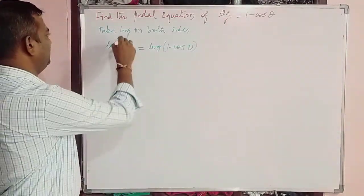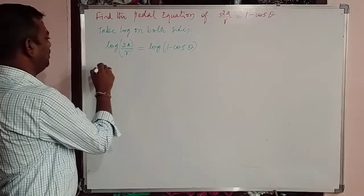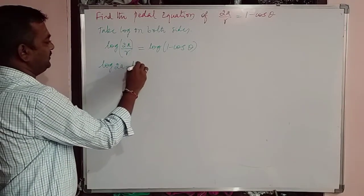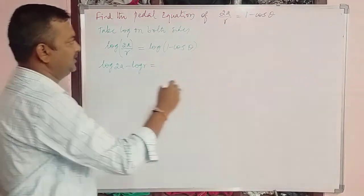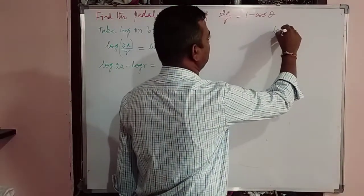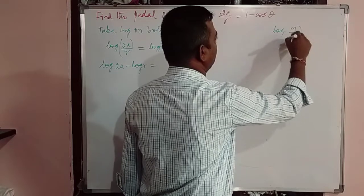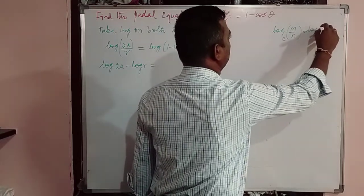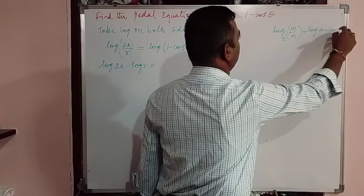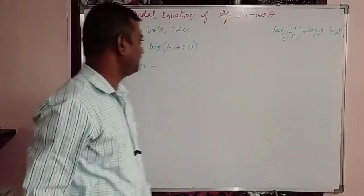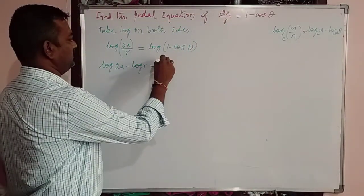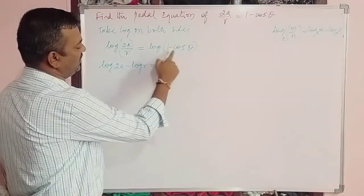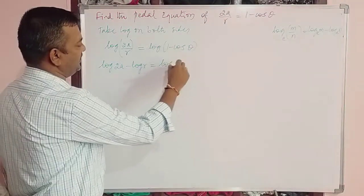Using the log property, log(m/n) = log m − log n, the left side becomes log(2a) − log(r). For log(1 − cos θ), you cannot apply any further log formula for a difference, so write it as it is.